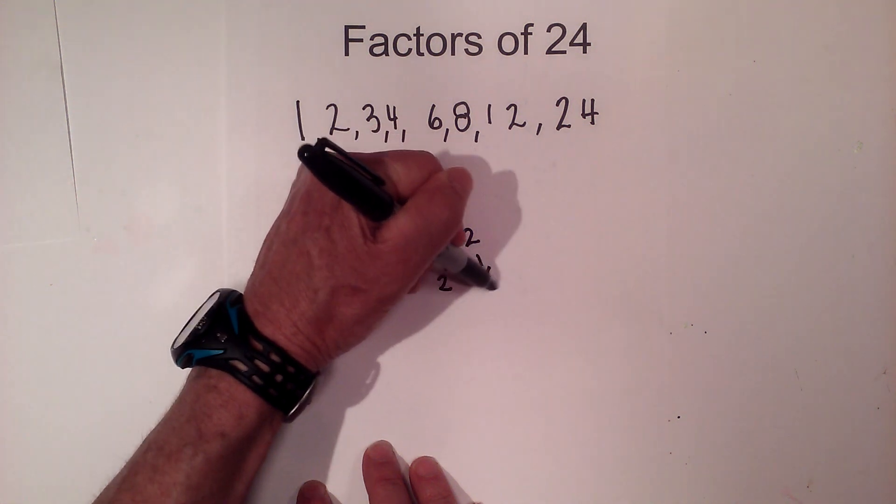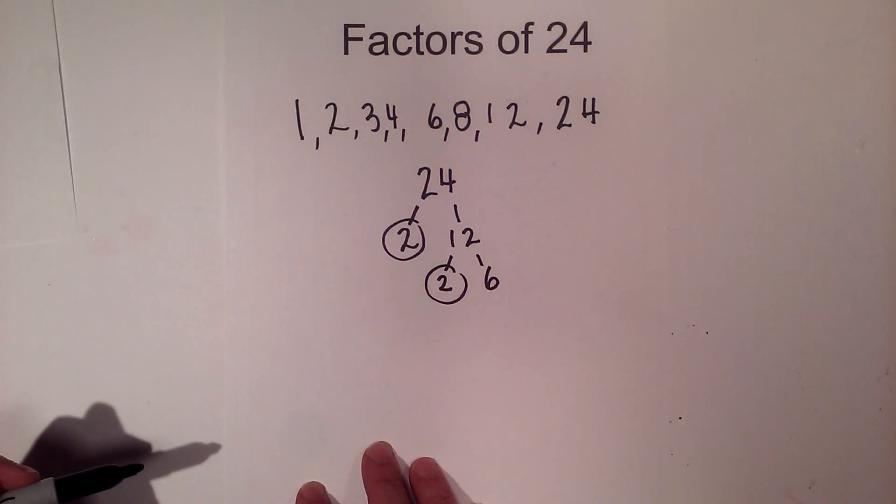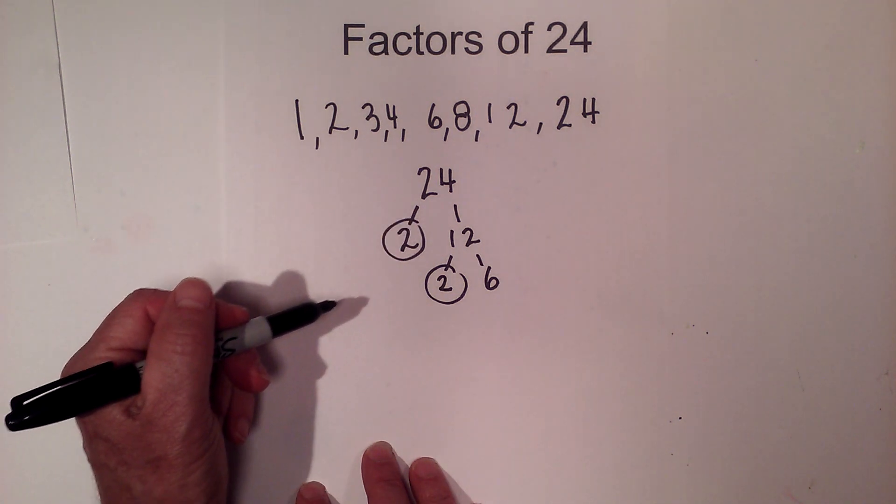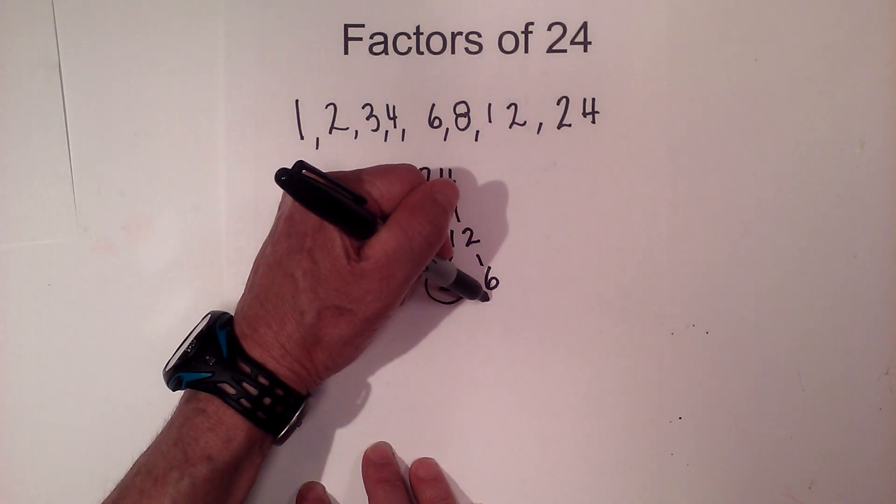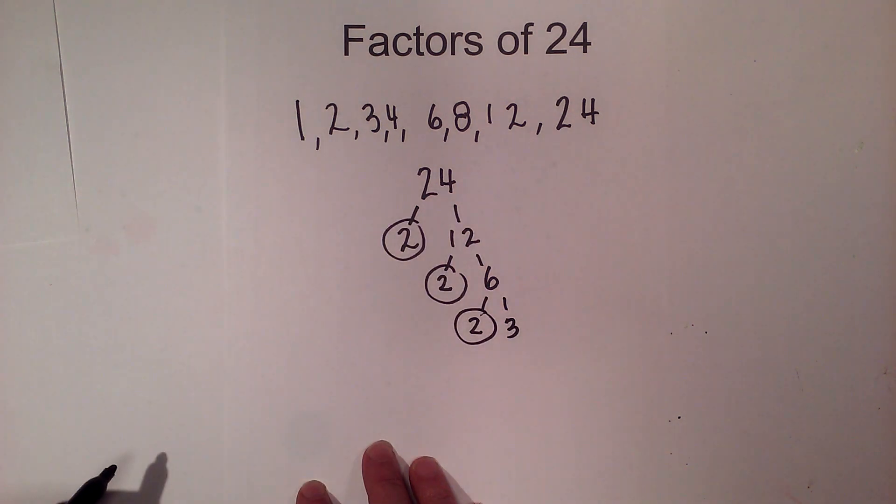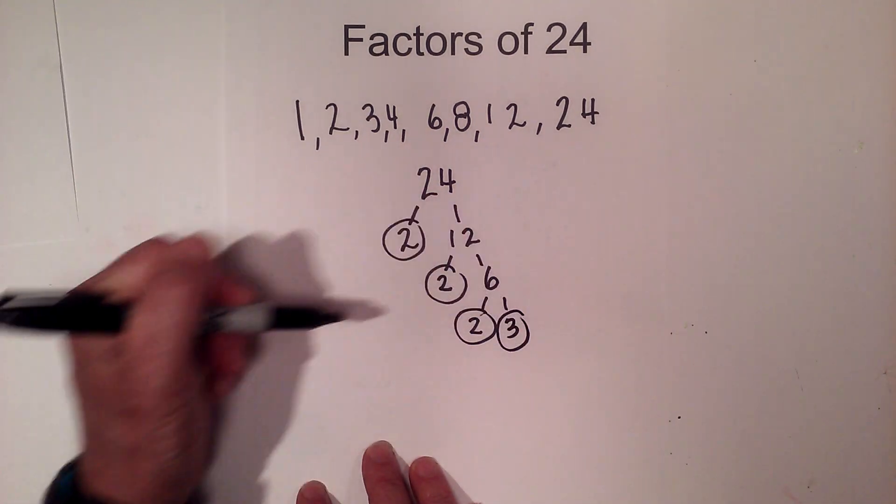Now 2 times 6 equals 12. Circle the 2 because it is prime. Now 2 times 3 equals 6. Circle both of them because they are prime.